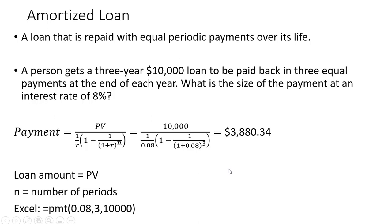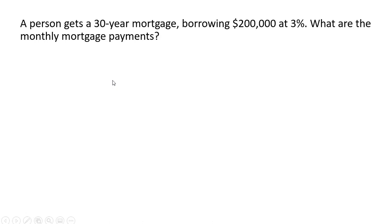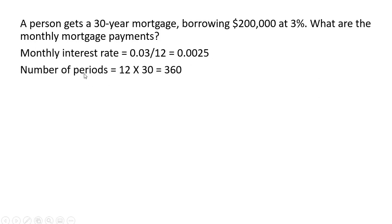Let's move on to another example. A person gets a 30-year mortgage borrowing $200,000 at 3%. What are the monthly mortgage payments? So the first thing we need to do is convert this 3% to a monthly interest rate. So dividing this 3% by the number of months we get the following. And then in terms of the number of periods this is a 30-year mortgage but you'll be making 12 payments a year for 30 years so we'll have 360 periods.